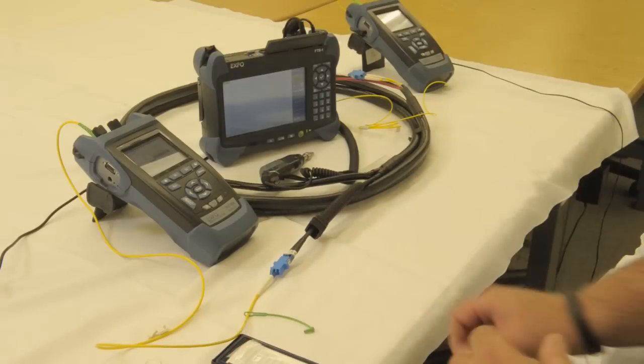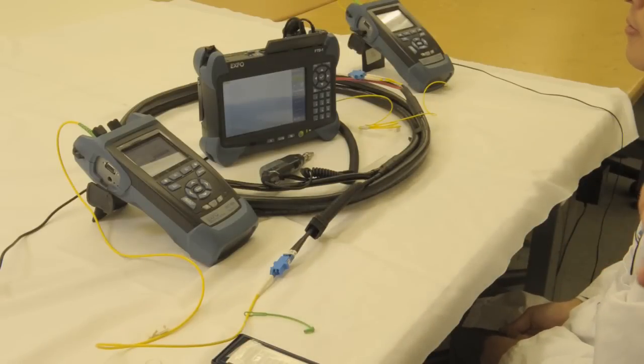The current requirement internally at Alliance is 0.35 per mated pair and 46 on return loss. So these are well within specification. So that's the basic steps for insertion loss and return loss testing.